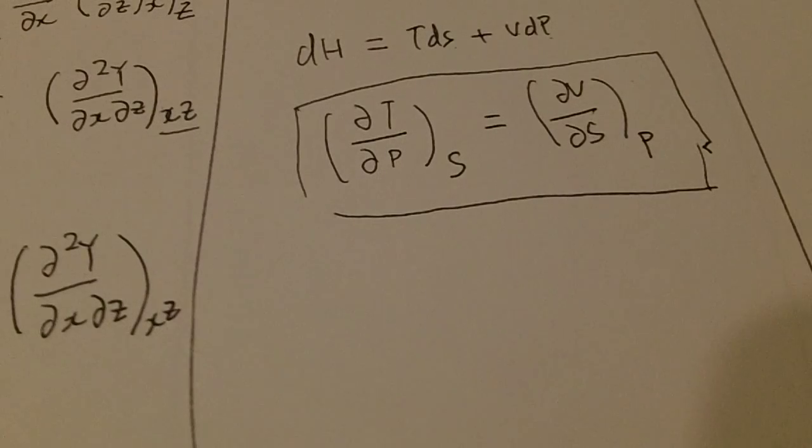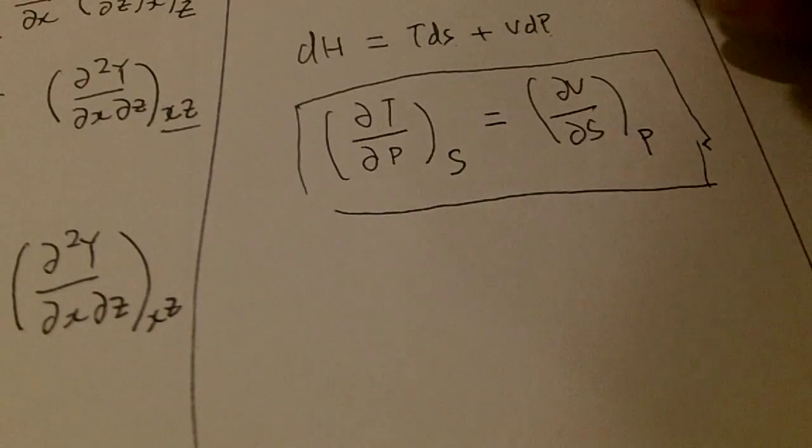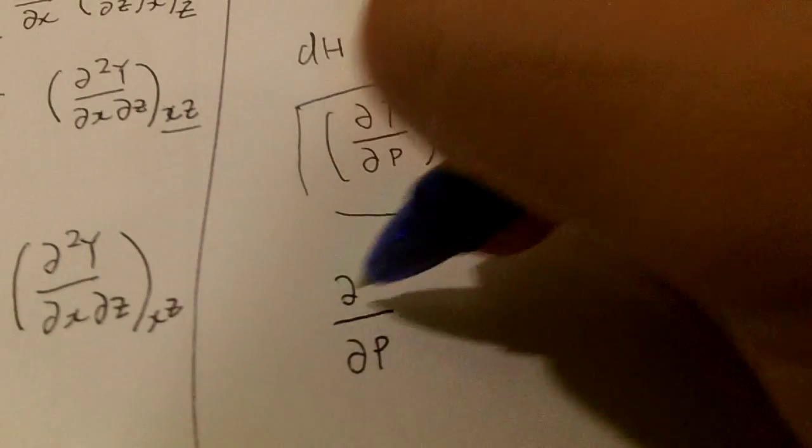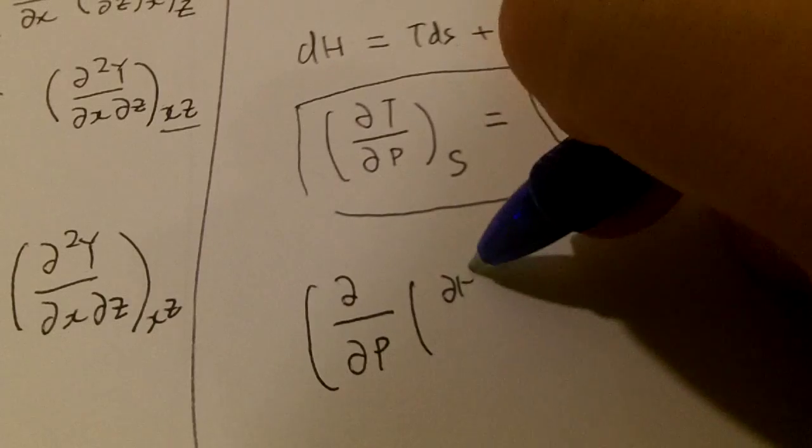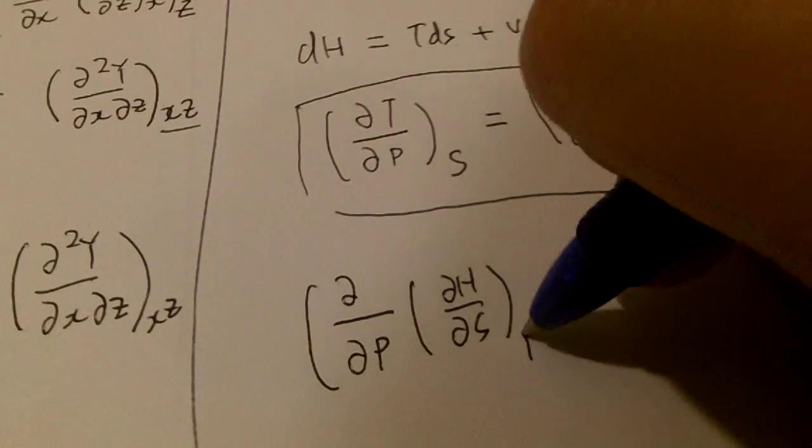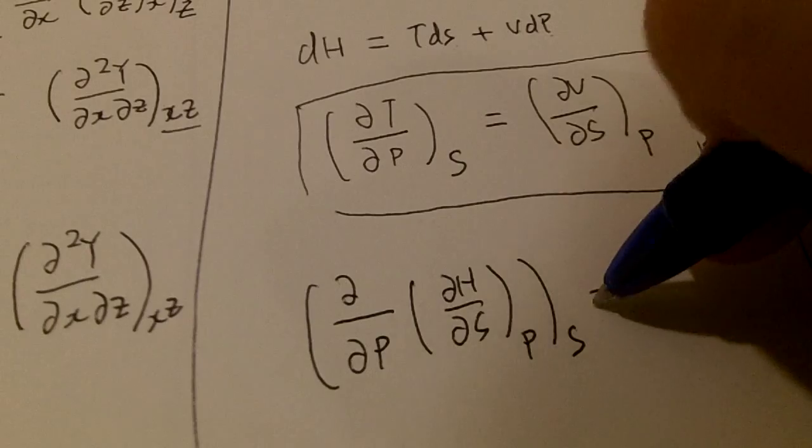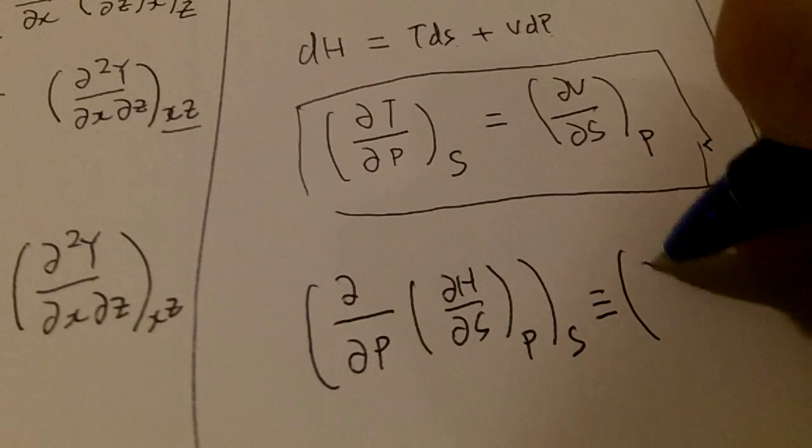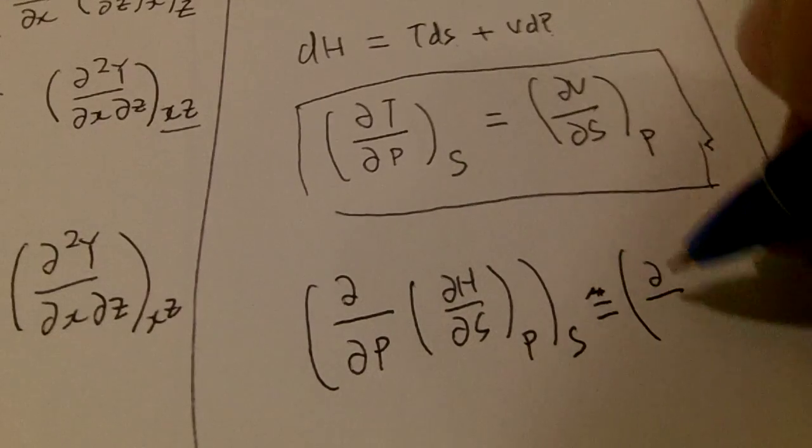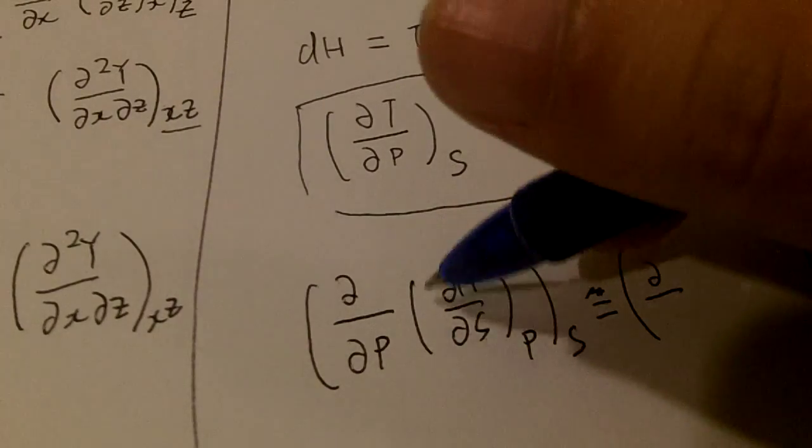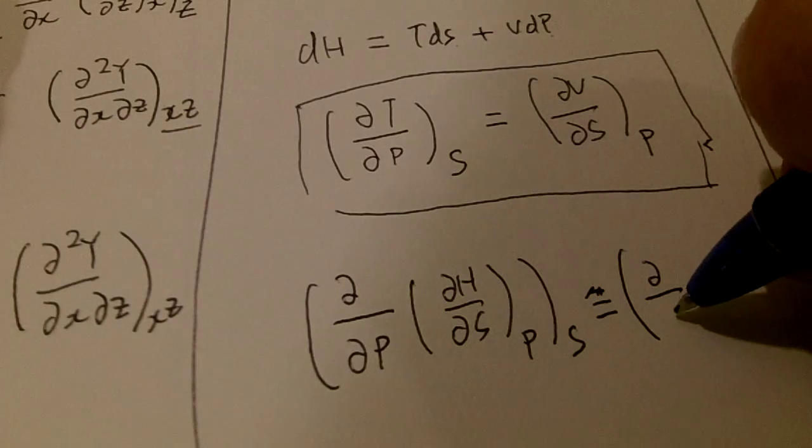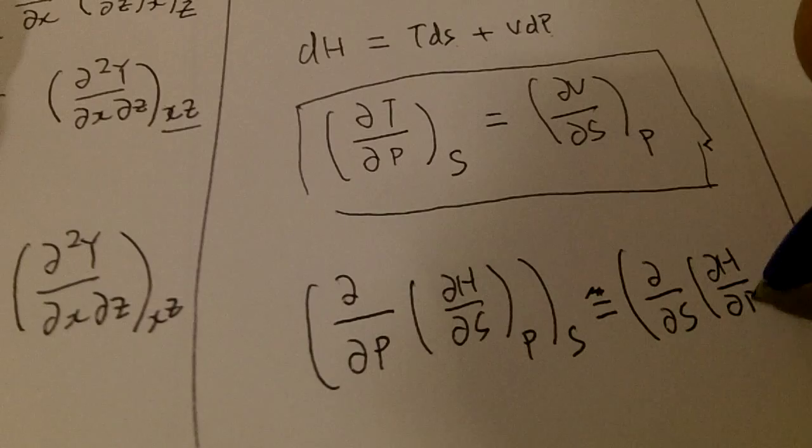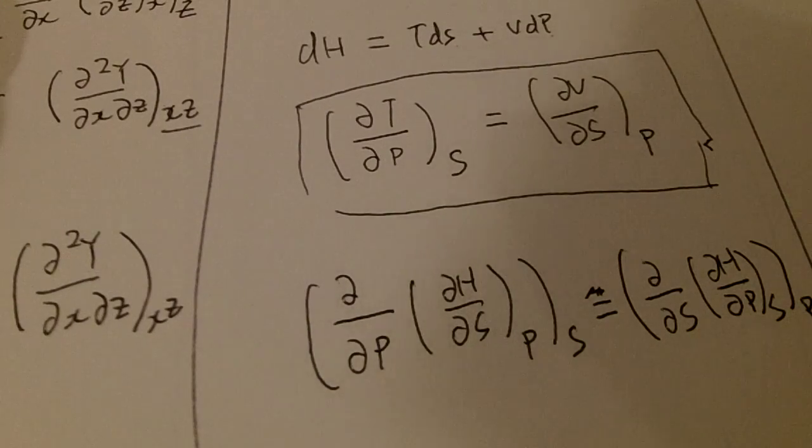Now how do we get this? It's the same idea that del H del S P, putting S constant, equals to del by del S del H del P S, keeping pressure constant.